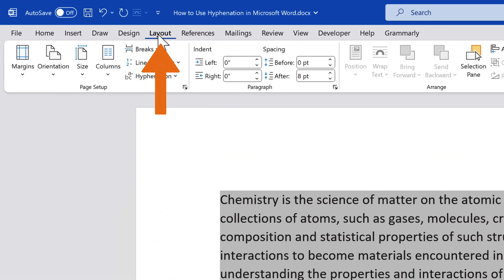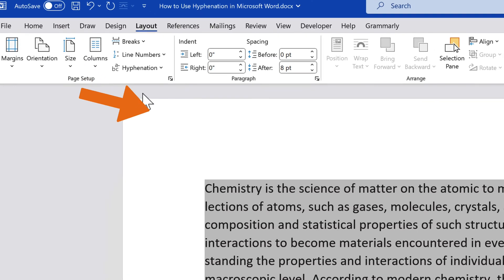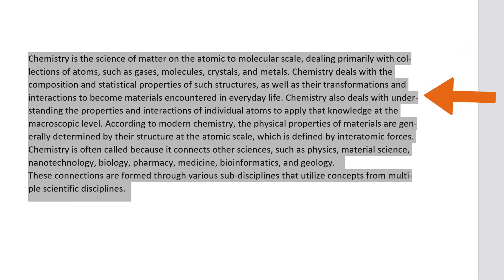Navigate to the Layout tab in the ribbon, and in the Page Setup group, click on the Hyphenation drop-down menu. If you select Automatic, MS Word will automatically hyphenate the selected text based on the language settings of your document.